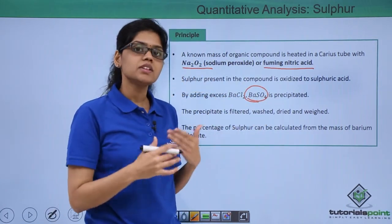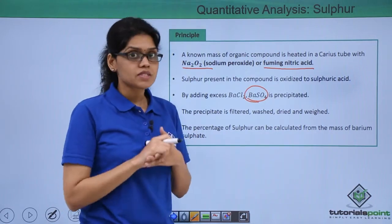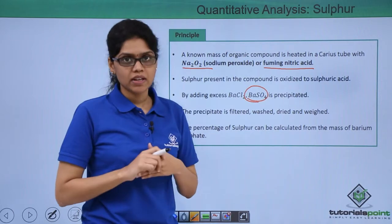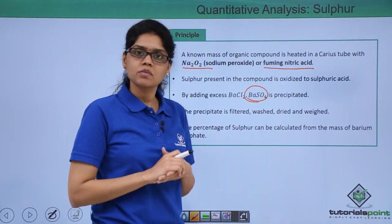So this particular precipitate is filtered, washed, dried and weighed. Now the percentage of sulphur in an organic compound can be estimated easily by determining the mass of barium sulphate.